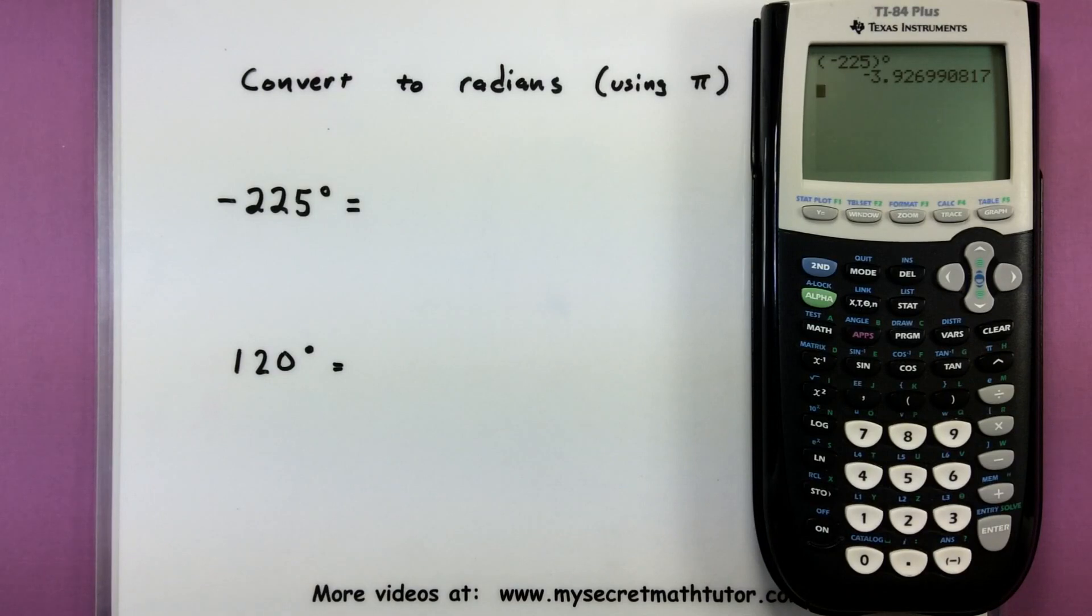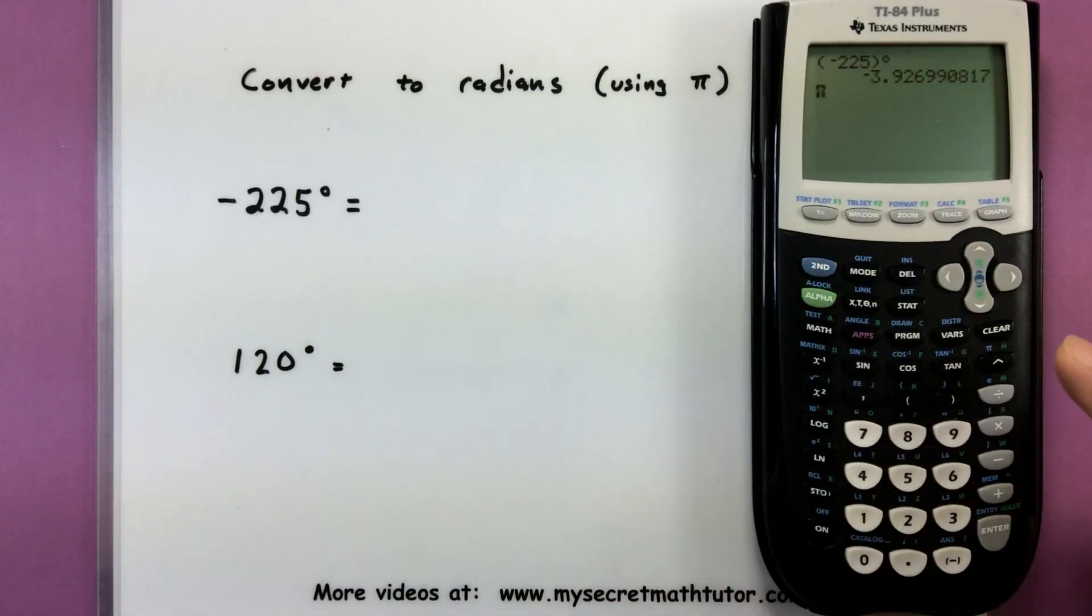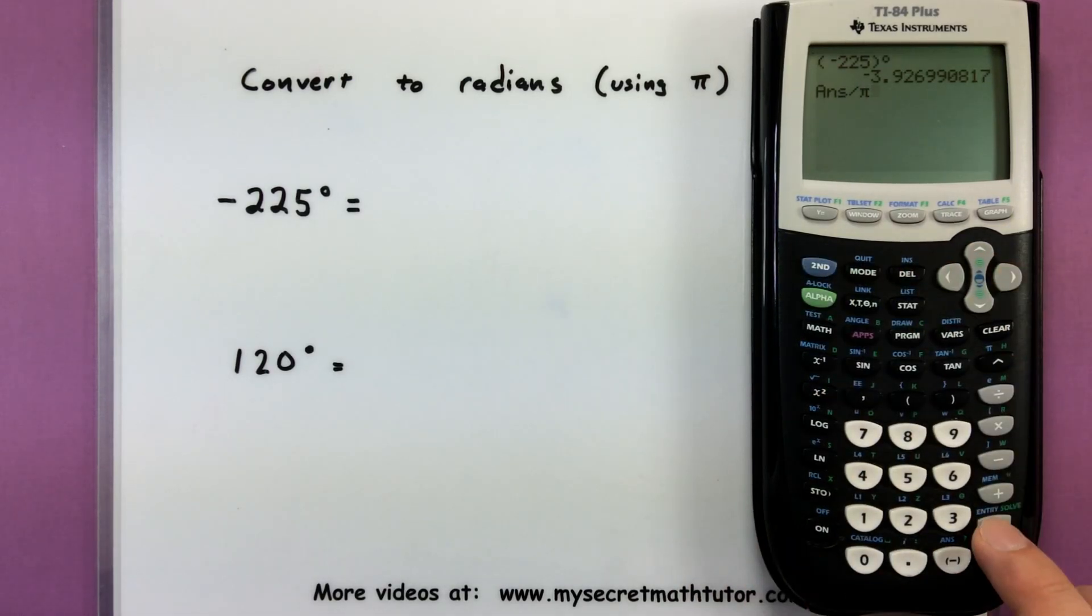Now this is the proper radian measure. Negative 3.926990817. That's actually pretty good. But if I divide this by π, it reveals that it may be a nice fraction as well. So I'm going to press second and I'm going to press divide by second π and press enter.